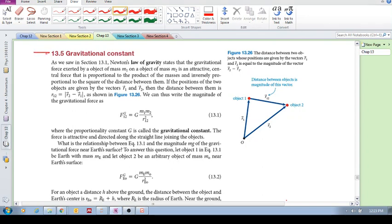Okay, let's now look at the gravitational constant, G. Where does this come from? How is it applied? We've already seen Newton's law of gravity states that the gravitational force of object 1 with mass 1 on object 2 is proportional to the product of their masses, and it's inversely proportional to the square of the distance between those two objects.